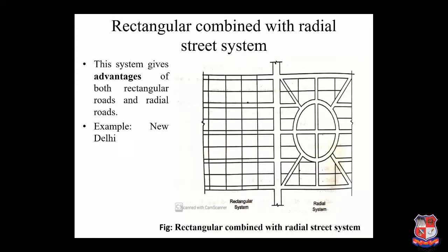The rectangular combined with radial street system shows the rectangular street system on the left side portion and the radial street system on the right side portion. This combined system gives the advantages of both rectangular and radial roads. New Delhi is an example of this type of system.